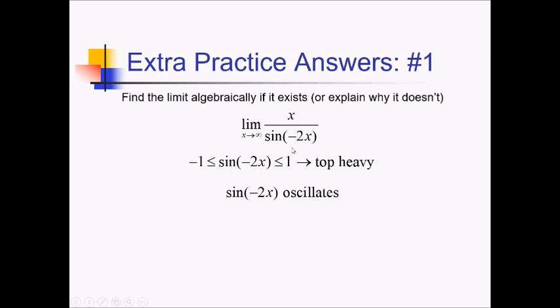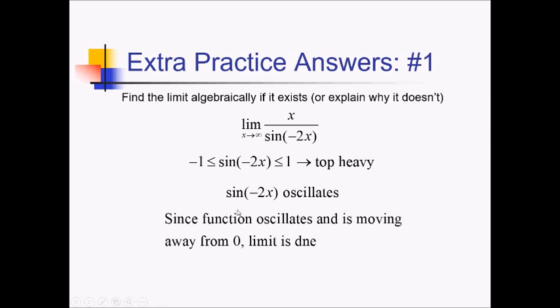So since we have a function that is oscillating back and forth between positive and negative, and it's moving away from 0, so it's not converging at 0, that means our limit does not exist. We can't specify whether it's positive or negative infinity because it keeps changing direction. So this is just plain old DNE.